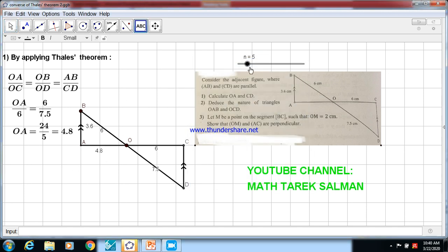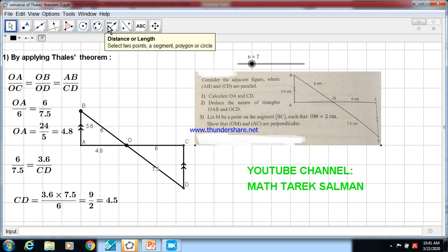Now I continue to find CD. I will use this ratio OB over OD because we have OB and OD. So OB is 6 over OD is 7.5 equals AB is given 3.6 over CD. We need to calculate CD. So CD equals 7.5 times 3.6 over 6, equals 9 over 2 equals 4.5. So CD is equal 4.5.